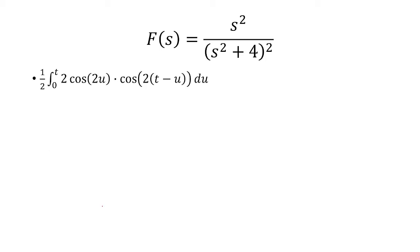And the reason I'm doing this is because I want to use this fact that 2 cosine a times cosine b is the same thing as cosine of a plus b plus cosine of a minus b. So for us, 2u is going to be a, and then 2 times t minus u is b.